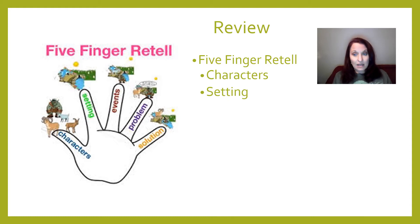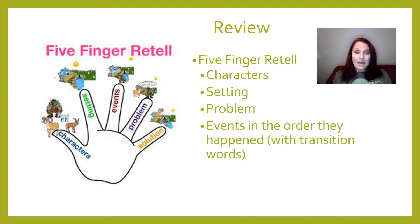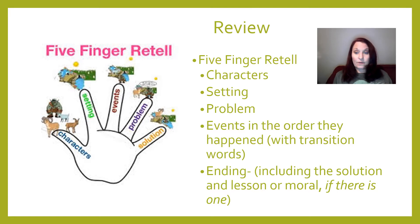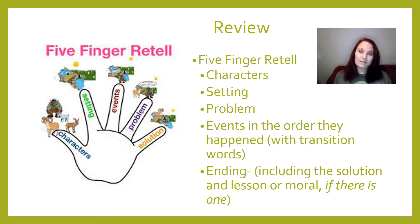The setting — that can be the time and place the story is happening, or sometimes just the time, or sometimes just the place. The problem that the characters run into, and then the events that start occurring after the problem has happened. Those need to be retold in order using transition words like first, next, after that, finally, in the end — words that show the order of events. And then the last part is the ending, which should include the solution to the problem — how the characters fix it — and sometimes the lesson or moral of the story, if there is one.